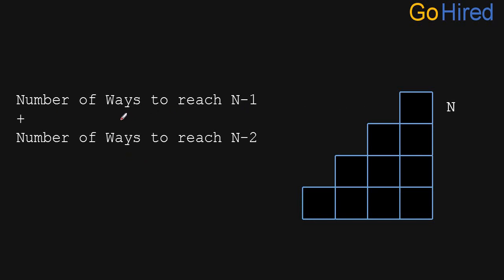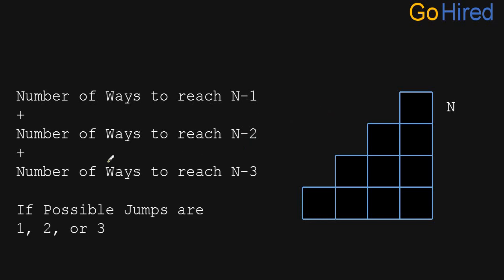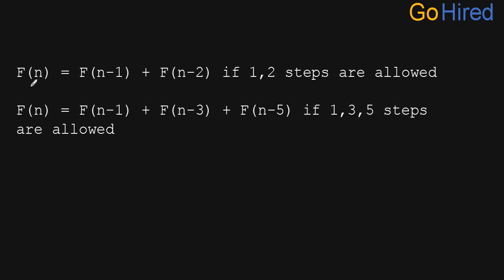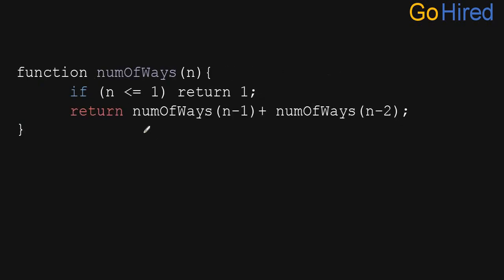In general, the number of ways to reach n equals number of ways to reach n-1 plus number of ways to reach n-2, where minus 1 and minus 2 are the possible jump sizes given. If we extend this for jumps of 1, 2, and 3, the equation becomes f(n) = f(n-1) + f(n-2) + f(n-3). For jumps of 1, 3, and 5, it becomes f(n) = f(n-1) + f(n-3) + f(n-5).